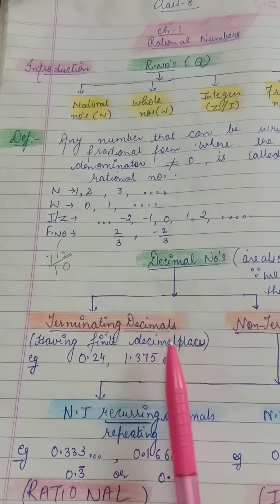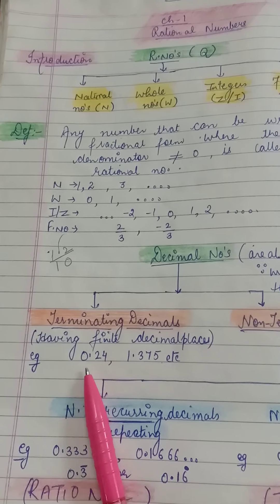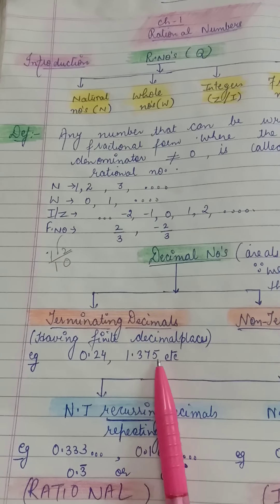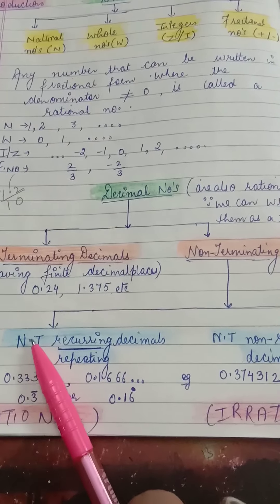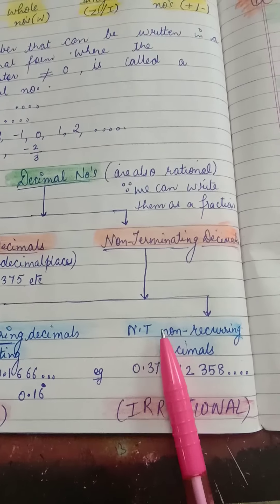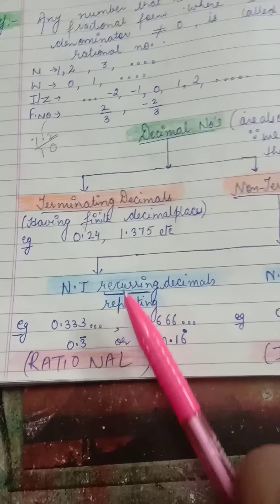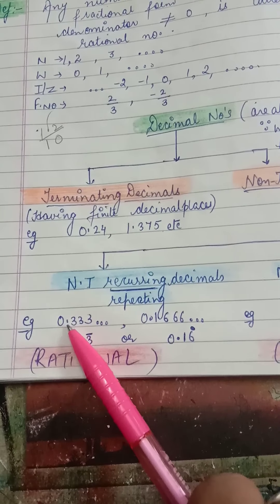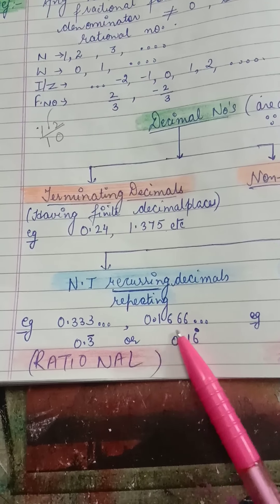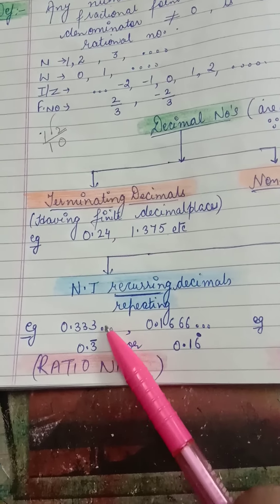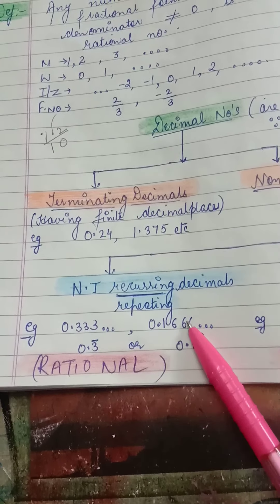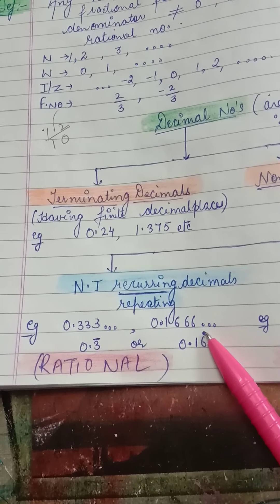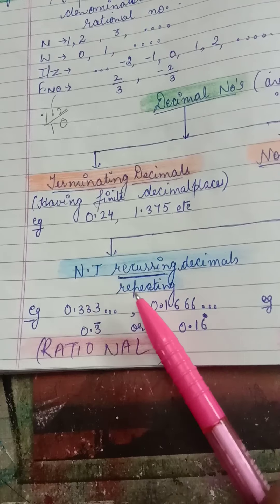Terminating decimals are numbers having finite or fixed decimal places — where you can count the decimal places — like 0.24 (2 decimal places) or 1.375 (3 decimal places). Non-terminating decimals are further classified into two categories: non-terminating recurring (repeating) decimals and non-terminating non-recurring (non-repeating) decimals. Non-terminating repeating decimals have the same digit repeated after the decimal, like 0.1666... where 6 is being repeated. We write this as 0.1 with a bar over 6.